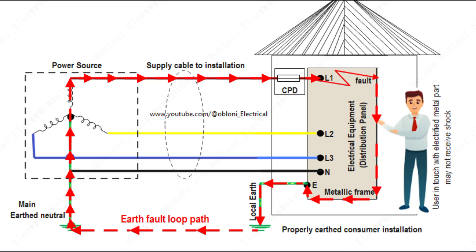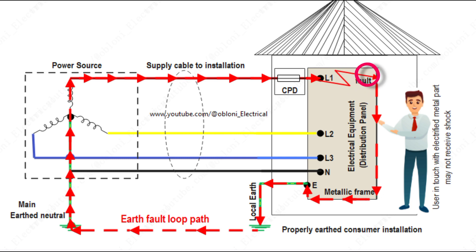Take note: in the TT system, the earth fault loop path includes the earth. That is why care must be taken to ensure that the earth electrode is properly connected to the earth, so that the impedance of the earth fault loop path will be very low. An earth fault loop path is the closed circuit that a fault current takes when there is a connection between a live conductor and earth, and in a TT system, the earth becomes part of that path.